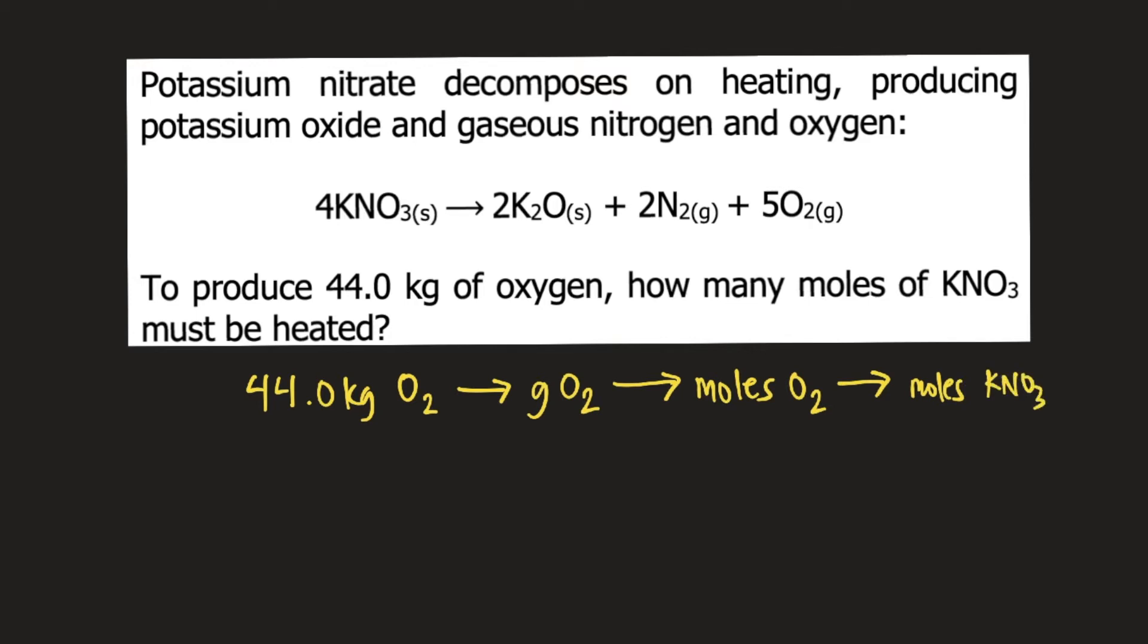Starting from 44.0 kilograms of O2, let's convert this to grams. We know that 1 kilogram is equivalent to 1,000 grams. Kilograms will cancel, and we now have grams of O2.